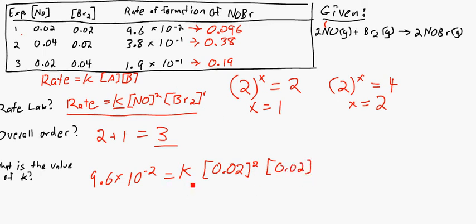And now you just solve for K. If you solve for K, you should get a value of 12,000. Or for proper scientific notation, 1.2 times 10 to the fourth power. I hope that clears up rate laws a little bit.